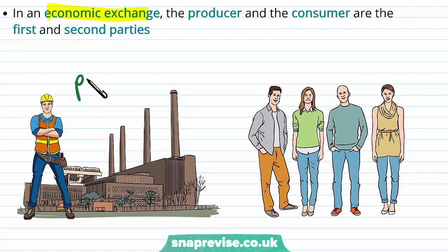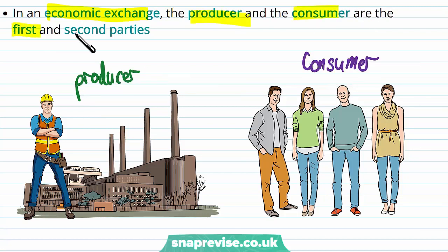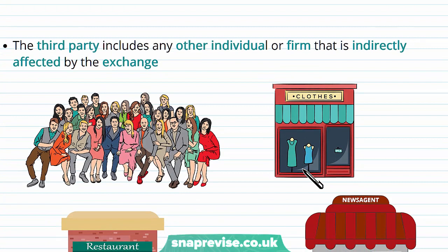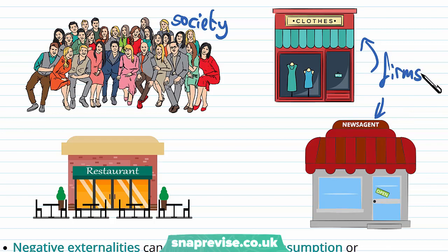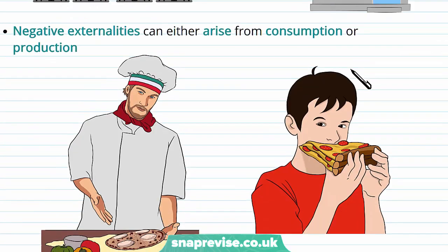In an economic exchange, we have our producer and our consumers — described as the first and second party — who are the people actually involved in the exchange itself. The third party includes any other individual or firm indirectly affected by the exchange, such as wider society or different firms in competitive industries. We can expect all kinds of people to be affected as the third party.